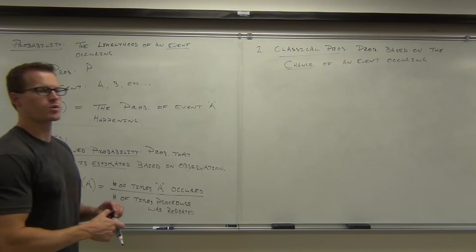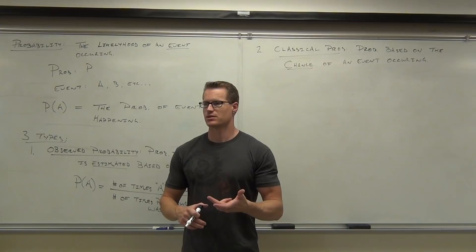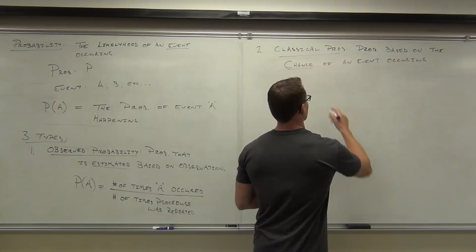For classical probability to work, each simple event has to have an equal chance of occurring.